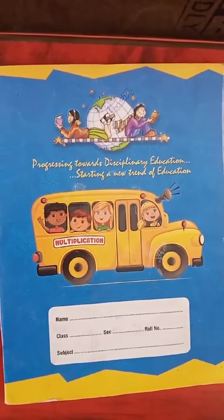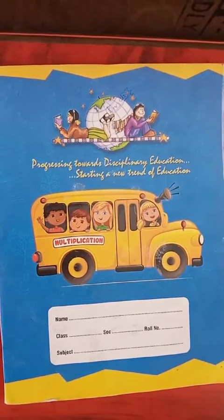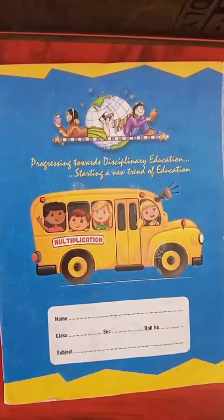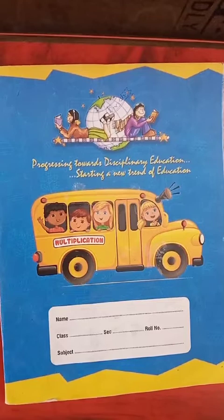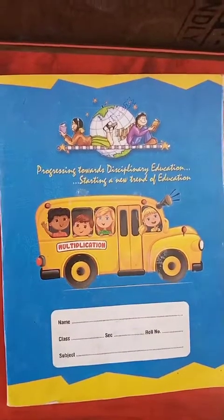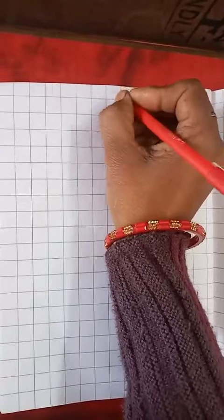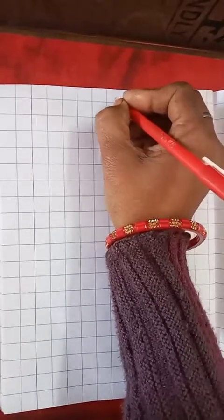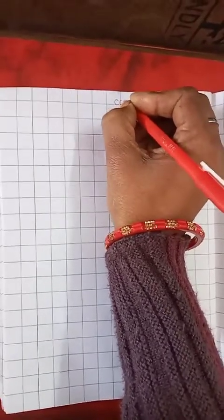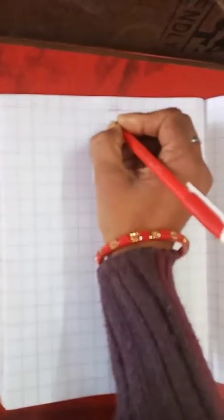You will also write with me. Open your notebook, your math page. Children, this is your math page. First we will enter the CW and date. So write here, CW and date.